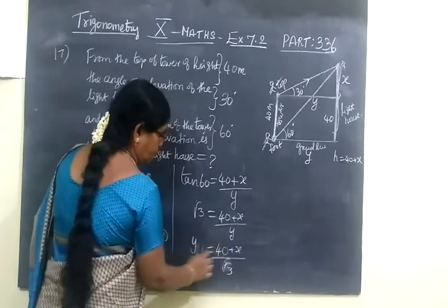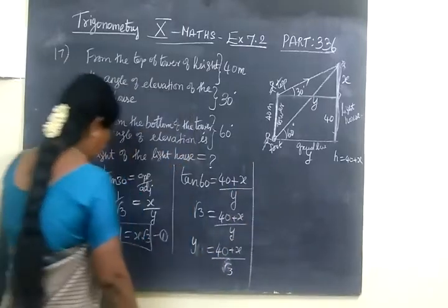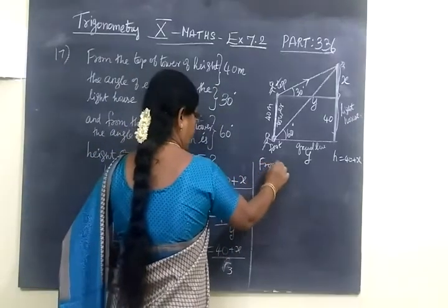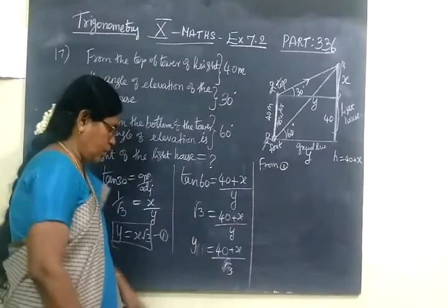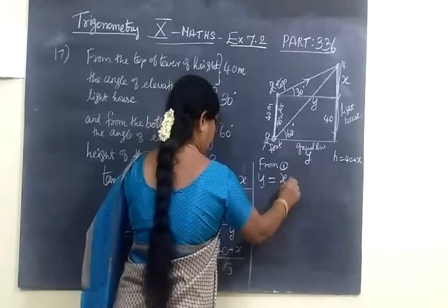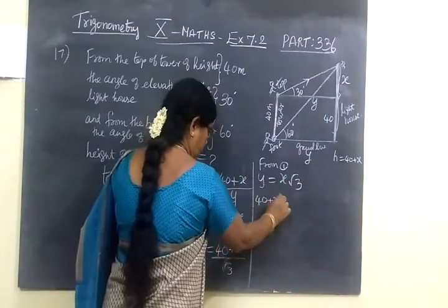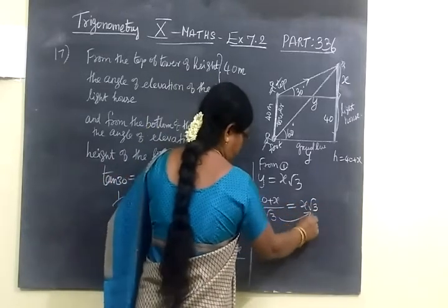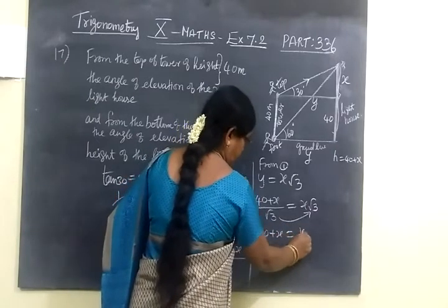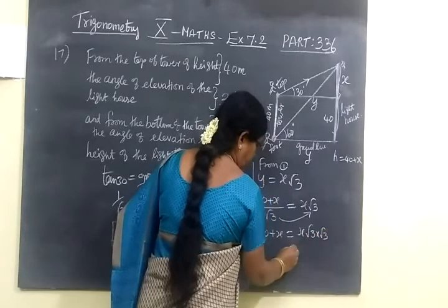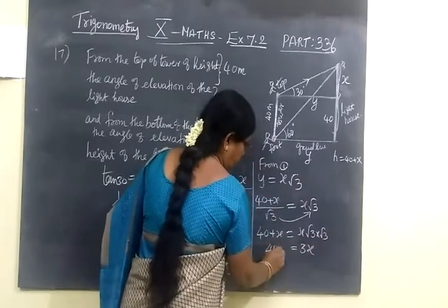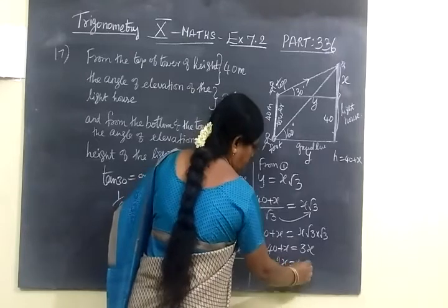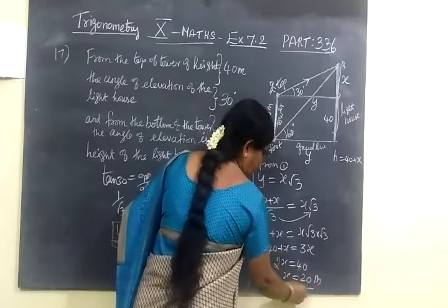Bring root 3 to the denominator and take y to the numerator. Now substitute into equation 1. Instead of y, write (40 plus x) by root 3. It is given y equals x root 3, so: (40 plus x) by root 3 equals x root 3. Therefore 40 plus x equals x root 3 times root 3 equals 3x. So 40 plus x equals 3x, giving 2x equals 40, therefore x equals 20 meters.